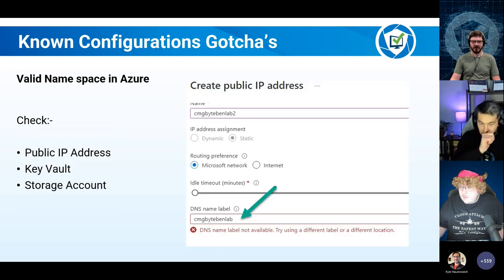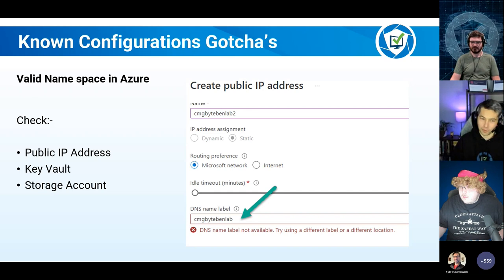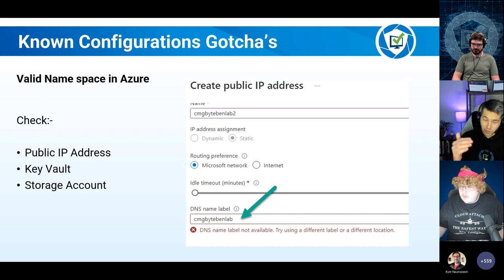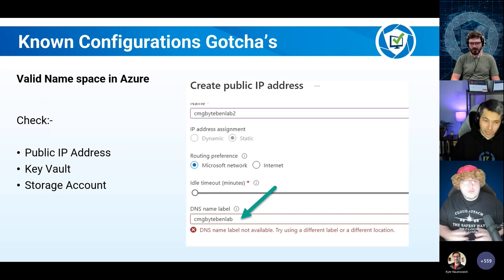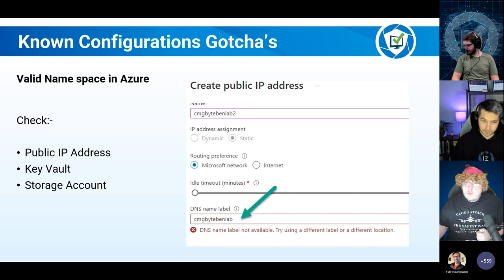Valid namespace: definitely check that the namespace is valid before you go and order a public certificate for that DNS name. Go into Azure, go through the motion of adding a public IP address — don't actually add it, just go through the motion to see whether that name is available. Make sure that name is available for public IP address, key vault, and storage account — they need to be unique. Otherwise your CMG deployment will fail.